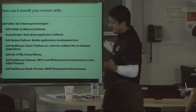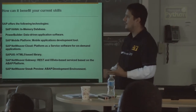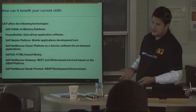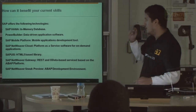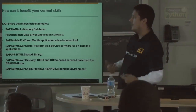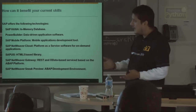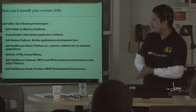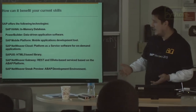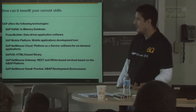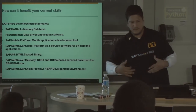Sorry for the bit of marketing, but these are some of the new technologies that SAP provides. We have SAP HANA, which is an in-memory database. We also have Power Builder, which has a new interface based on .NET. We have the SAP platform for mobile applications running on BlackBerry, iPhone, Android, and more. We have SAP Netweaver Cloud, a platform-as-a-service. SAP UI5, a set of libraries based on HTML5. SAP Netweaver Gateway for creating REST and OData services. And the SAP Netweaver Snyk Preview for ABAP developers, ABAP being the main development language inside SAP.